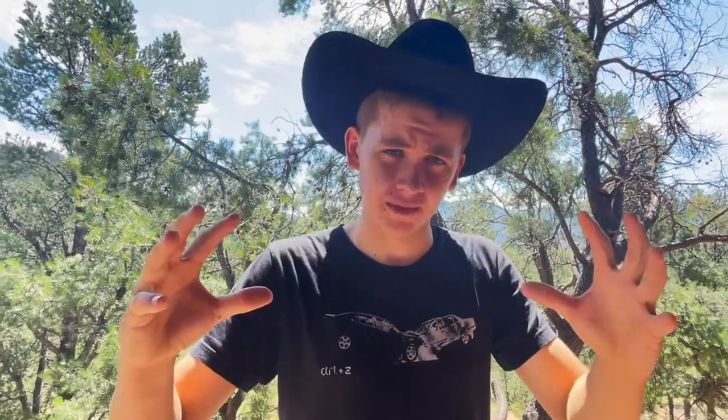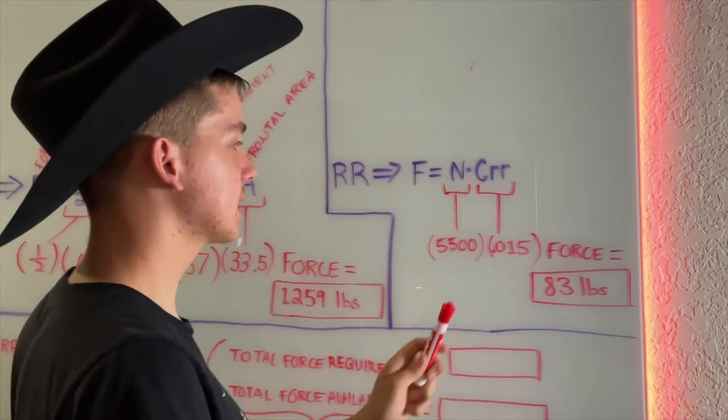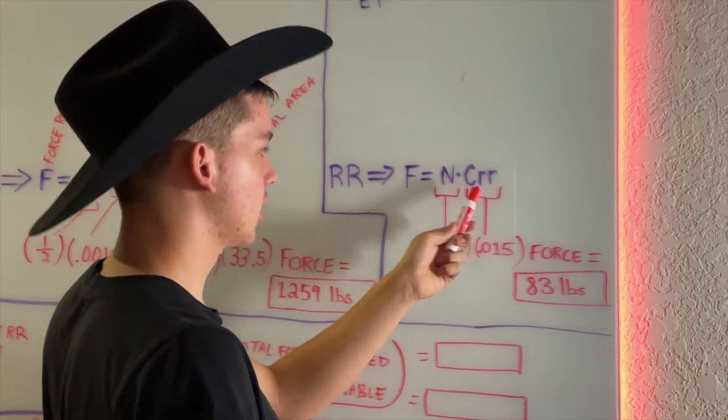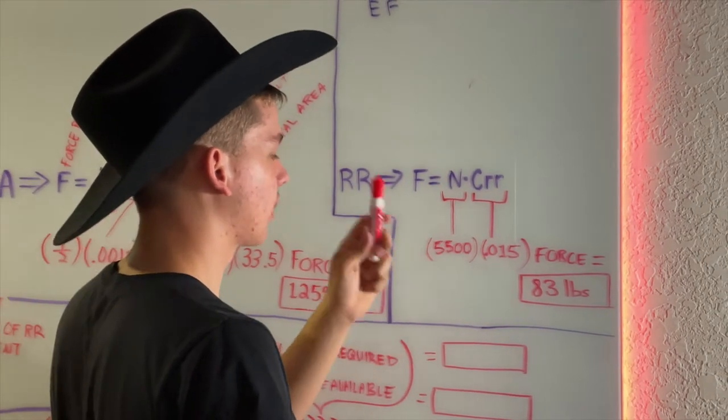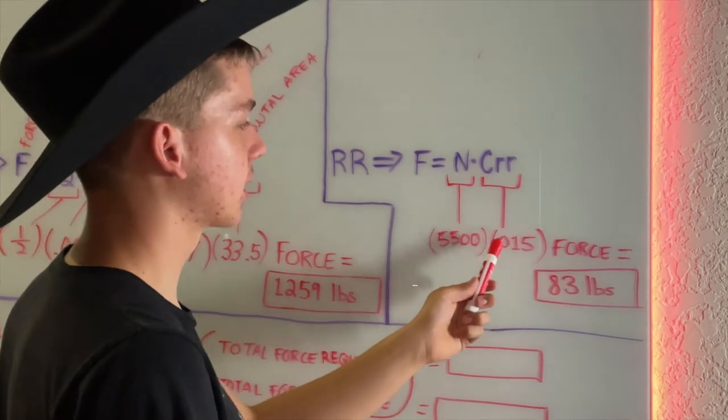Next up is rolling resistance. The force required to overcome rolling resistance is easily calculated by multiplying normal force times the coefficient of rolling resistance. Normal force in our case is just the weight of our vehicle because we're on flat ground. We multiply that by the coefficient of rolling resistance, which for a pneumatic rubber tire on dry asphalt will be somewhere near 0.015.